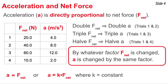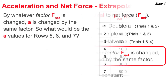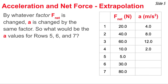That's what the proportionality symbol means. Or we state it as an equation, where acceleration is equal to k times F_net, where k is a constant of proportionality. We're going to apply this principle — by whatever factor the F_net is changed, the acceleration is changed by the same factor — to find the acceleration values for rows 5, 6, and 7 in this table.